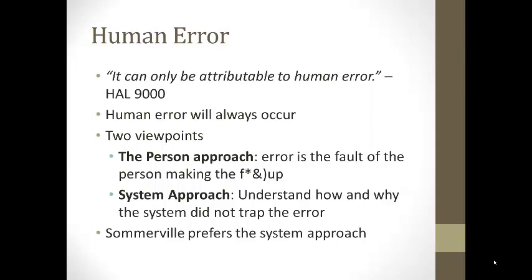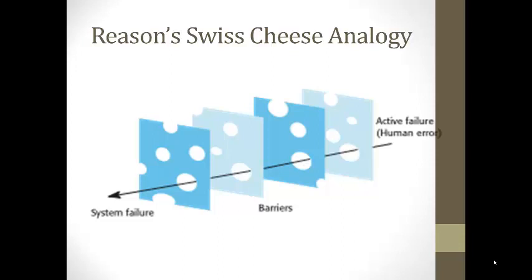As Hal 9000 once said, failures can only be attributable to human error — and in fact, human error will almost always occur. There are two viewpoints: the person approach, where the error is the fault of the person making the mistake; and the system approach, which asks how and why the system did not trap the error. Somerville prefers the system approach. Researcher Reason has something called the Swiss cheese analogy, where different barriers prevent system failure — there are holes in every barrier (latent conditions), and when they align they cause system failure. You want to make it so those holes can't line up.